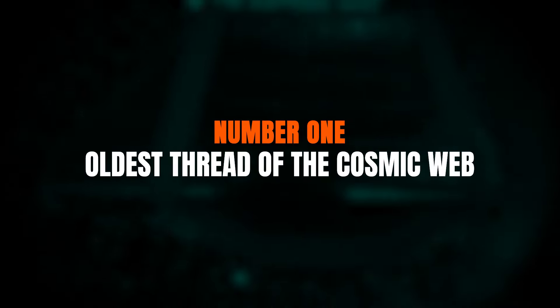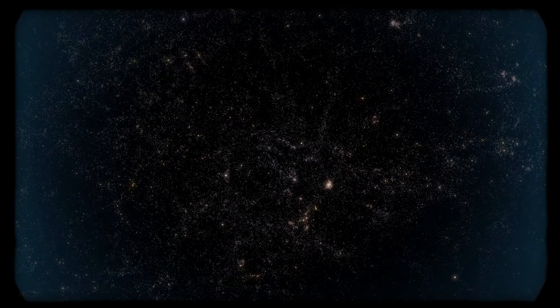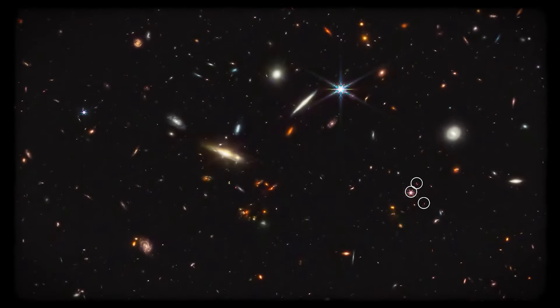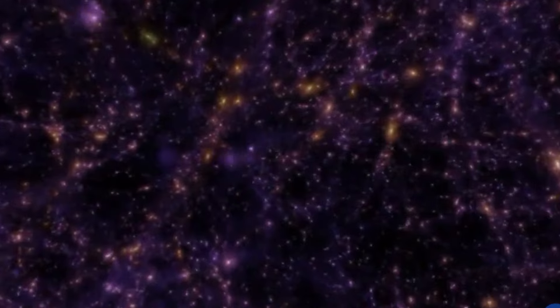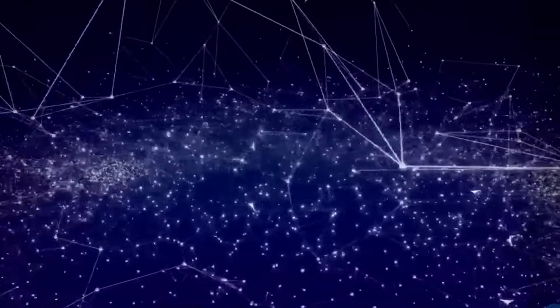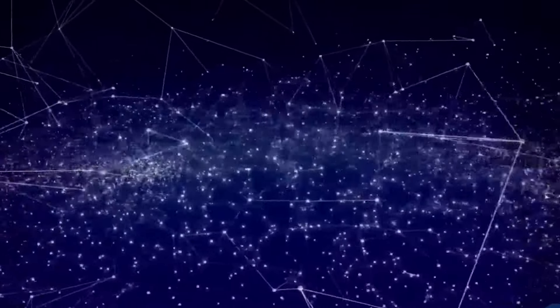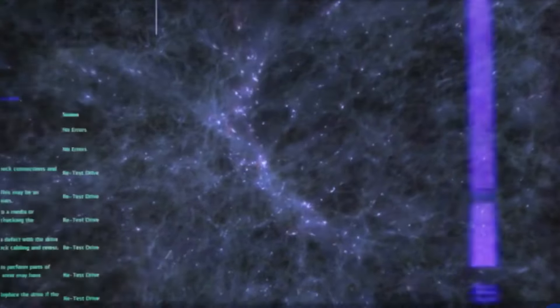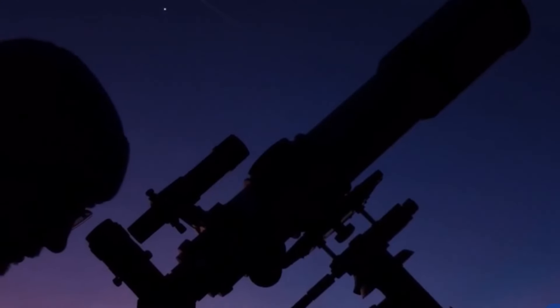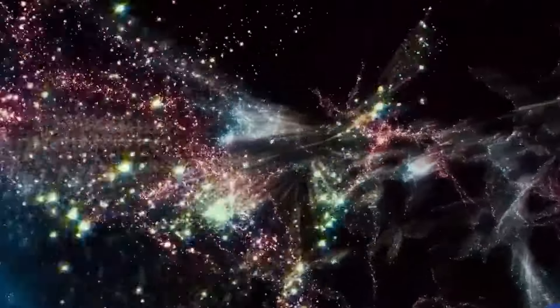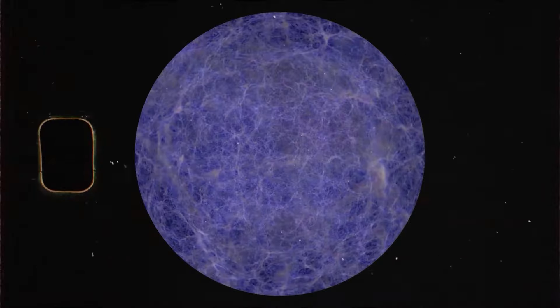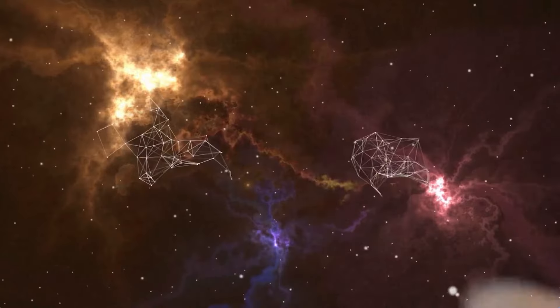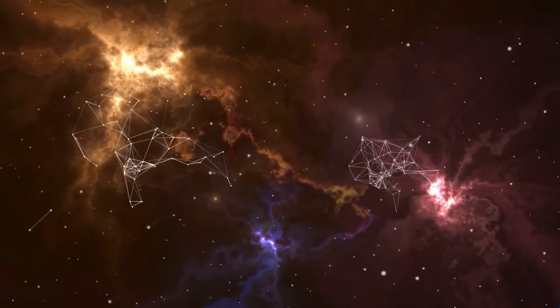Number one, oldest thread of the cosmic web. On a clear night, it might seem like the stars above are scattered evenly, but in reality, they're part of a cosmic web that links galaxies across the universe like a spider's web. Using data from the James Webb Space Telescope, astronomers have been able to discover a massive gassy tendril composed of 10 closely packed galaxies stretching over 3 million light years. This ancient filament of gas and stars might be the oldest known thread of the cosmic web, stretching back nearly to the dawn of the universe.